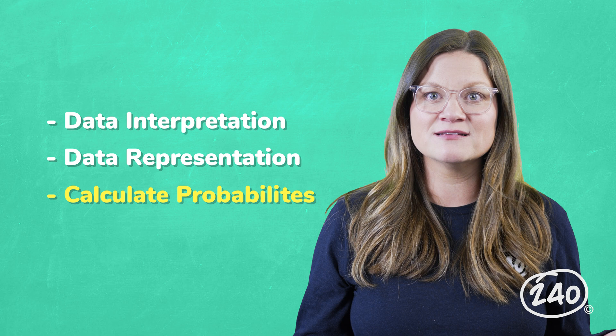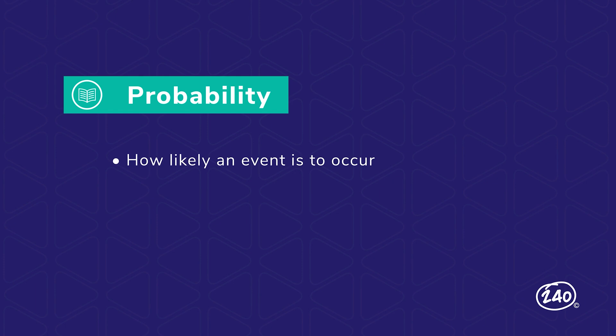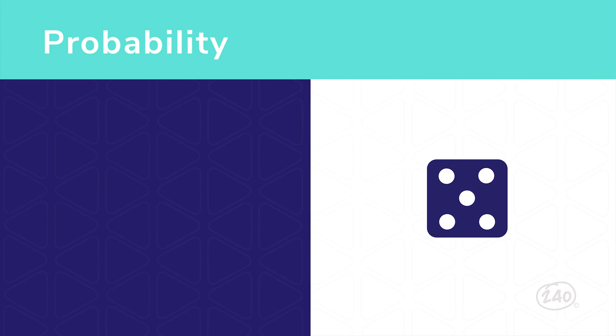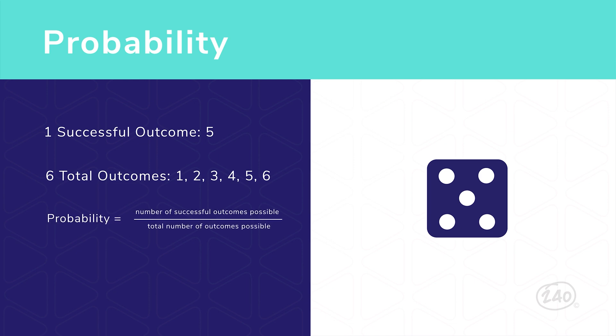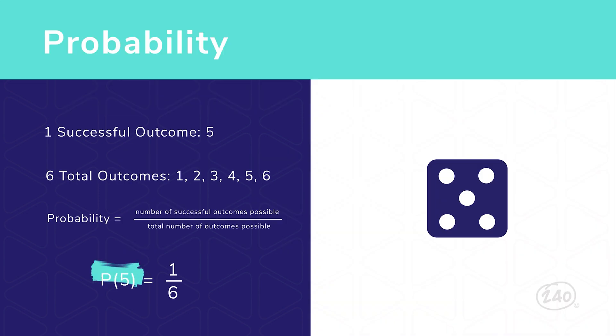Ready to check out calculating probabilities? We've got a great video on this in our guide. Let's take a look! Probability is the likelihood of an event occurring. Mathematically, it equals the number of successful outcomes possible over the total number of outcomes possible. Consider trying to roll a 5 on a standard six-sided die. There is one way to have a successful outcome and six possible total outcomes. So, the probability is 1 over 6. The notation used for probability is a p, followed by parentheses to indicate the event. For example, p parentheses 5 means the probability of rolling a 5 on a die.